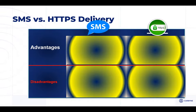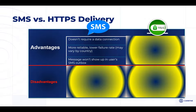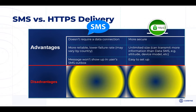Let's look at the SMS advantages. First, it doesn't require a data connection. It is reliable — most SMS, especially in the US. It also has a small advantage in that it doesn't show up in your SMS outbox even though it was sent from your phone. Looking at HTTP, it's more secure because it goes across the wire as encrypted. It also has an unlimited size — so in addition to location information, it can also send things like altitude, the device model of your phone, and whether the phone is a burner phone or a paid subscription.